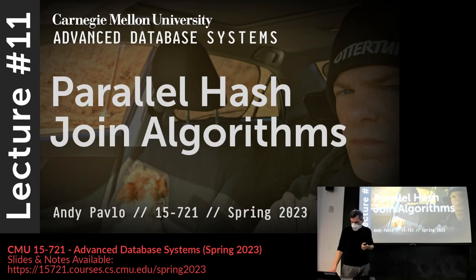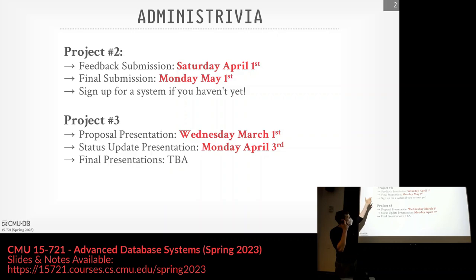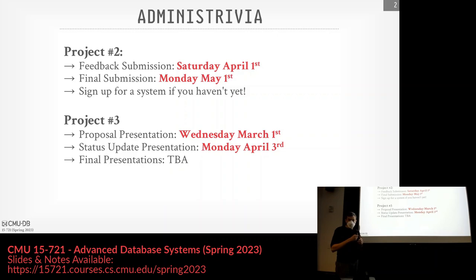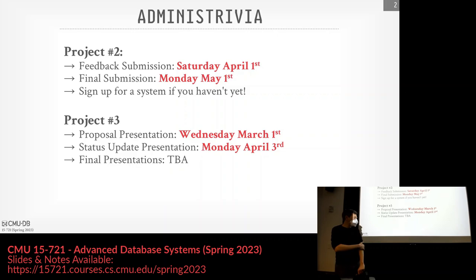For class project stuff, I posted on Piazza last week about project two and project three. I still need to upload the project three info page — I'll do that tonight. For project two, if you haven't signed up for a database system yet, please do that. I will also put out a list of ones I think are interesting. The project three proposal is basically what I talked about last class: what you're going to do, how you're going to do it, how you're going to test — super high level, not a three-page paper. It's just slides for five minutes.